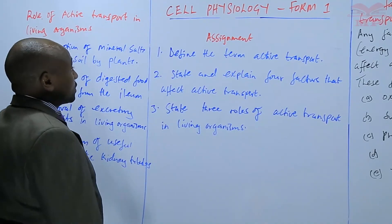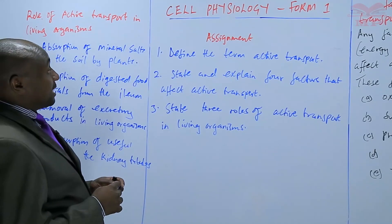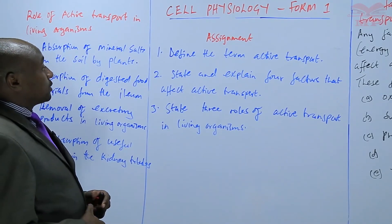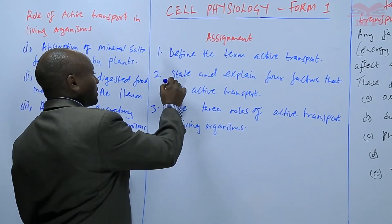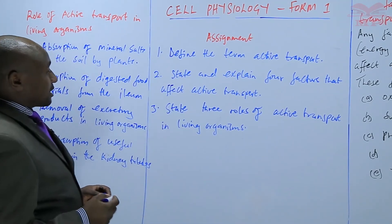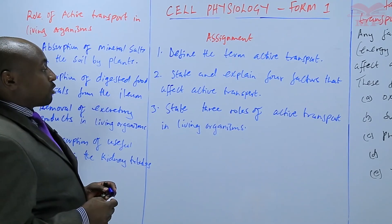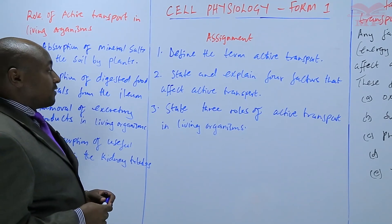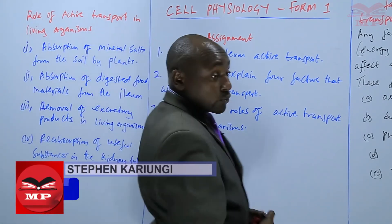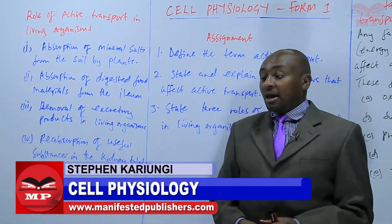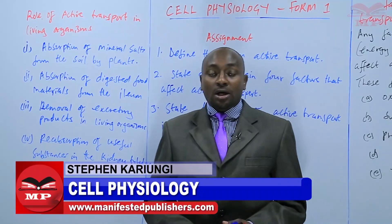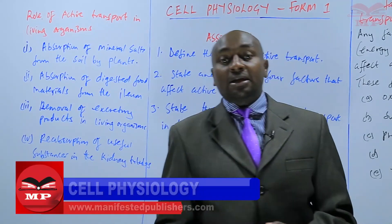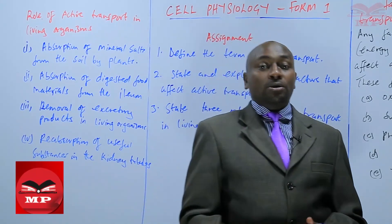The first question in the assignment: define the term active transport; state and explain four factors that affect active transport; and state three roles of active transport in living organisms. Our lesson will end there, and that marks the end of the topic of cell physiology. We shall meet another time in a different topic — goodbye.